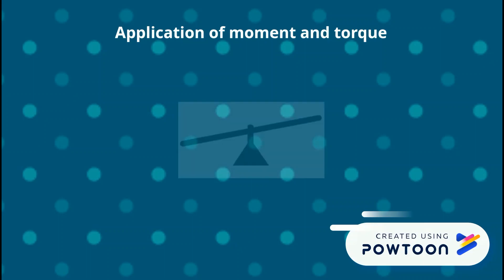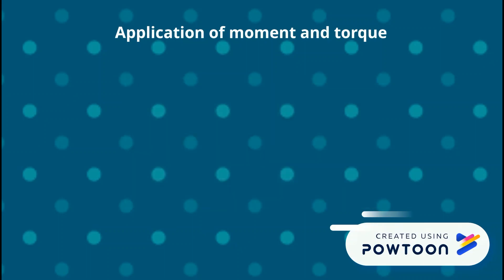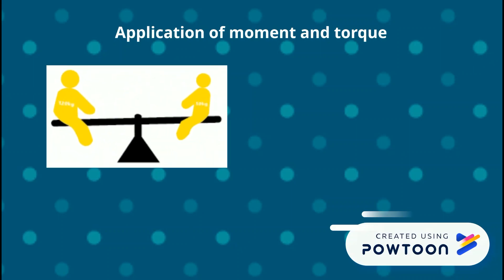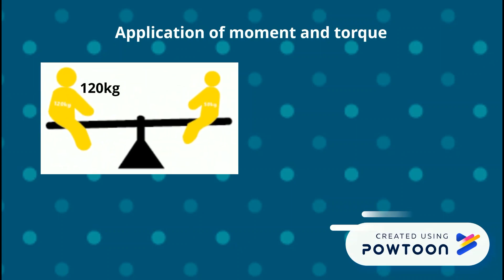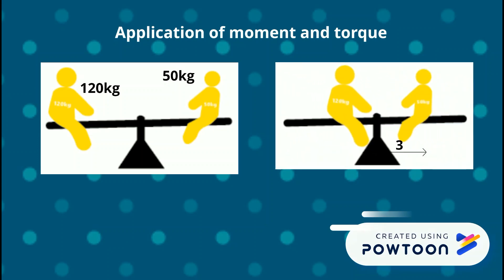I hope everyone has played on a seesaw at least once in their life. What if I tell you that you can keep the seesaw balanced by having a 120 kg person on one side and a 50 kg person on the other side? It seems difficult to accept, but if you place them such that the lighter person is at 3 meters from the center and the heavier person is at 1 meter, they both will apply the same moment and the seesaw will be balanced.